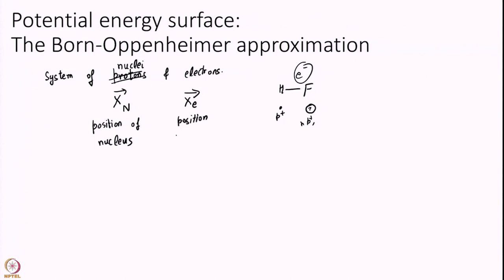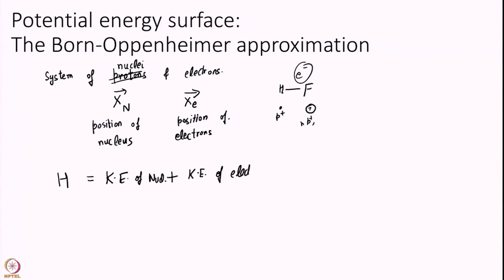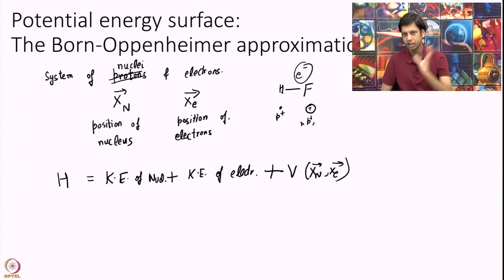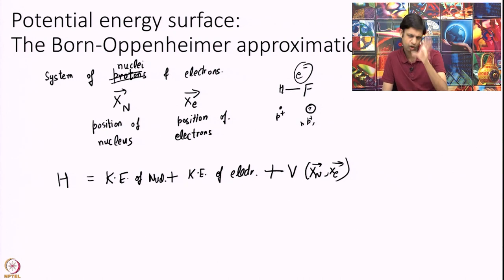I can write the same Hamiltonian as I have been writing so far, which is kinetic energy of the nucleus plus kinetic energy of electrons plus some potential, which is nothing but the Coulomb potential. So the Hamiltonian is kinetic energy plus potential energy: KE of nuclei plus KE of electrons plus some net potential energy.